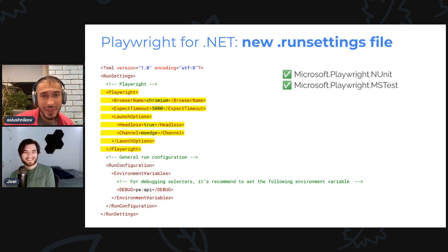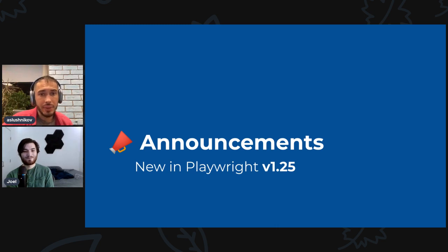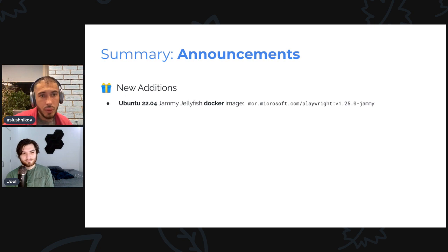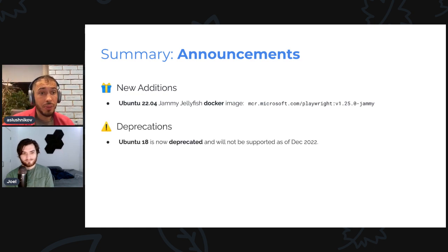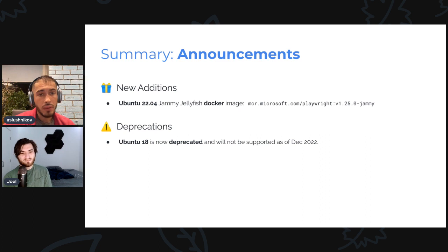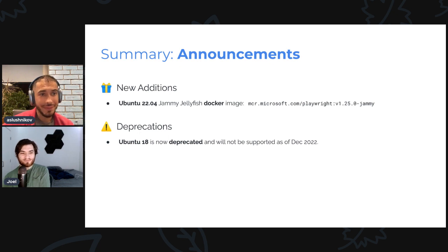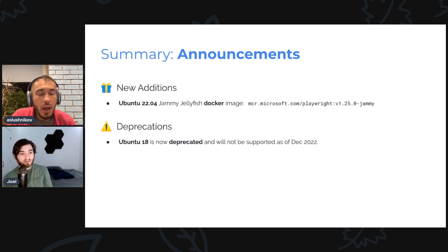A few announcements: we now ship an Ubuntu 22 Docker image — it's called Jammy, feel free to download it. Ubuntu 18 is now deprecated and will likely not be supported at all after December 2022 — pretty much the same timeline as GitHub. If you have workflows running against Ubuntu 18, please transition to the new one. On December 22 we will stop shipping browsers for Ubuntu 18, so you won't be able to install and use Playwright browsers on it — though old Playwright versions will be fine.